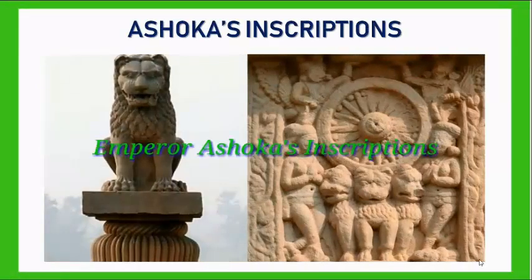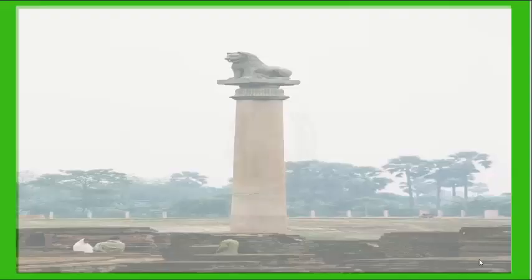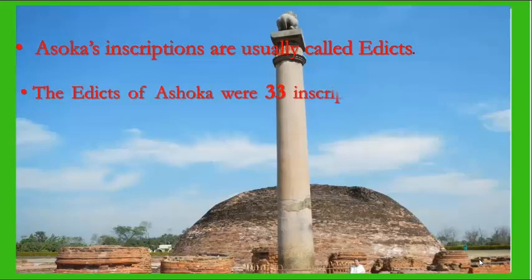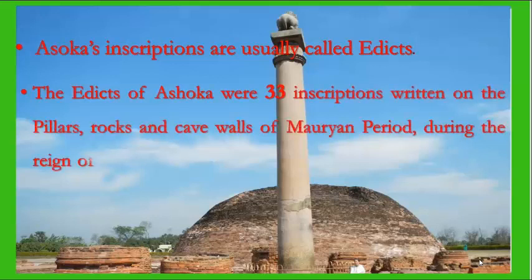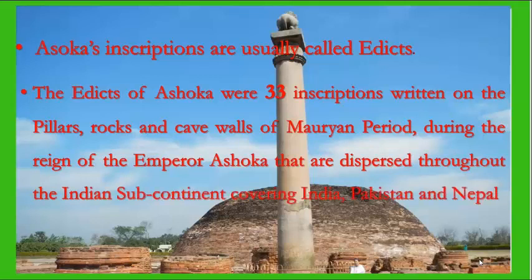Asoka's inscriptions are usually called Edicts. The Edicts of Asoka were 33 inscriptions written on the pillars, rocks and cave walls of the Mauryan period, during the reign of Emperor Asoka. They are dispersed throughout the Indian subcontinent, covering India, Pakistan and Nepal.